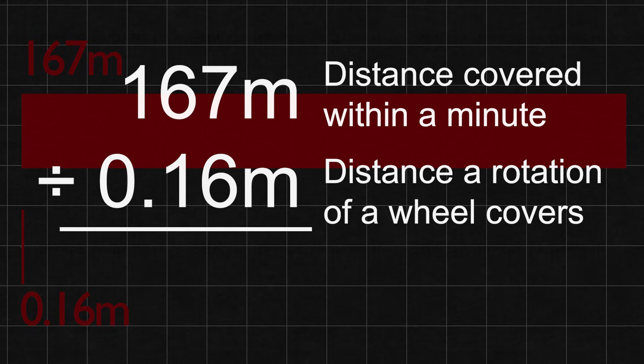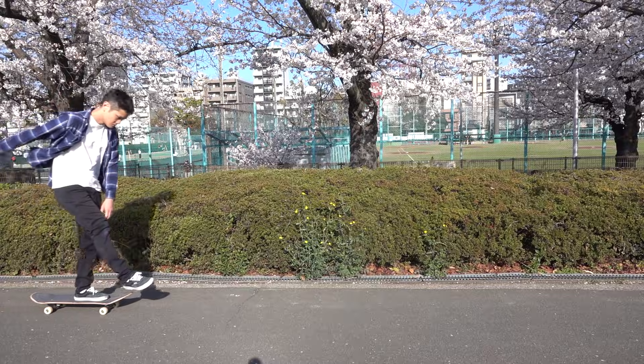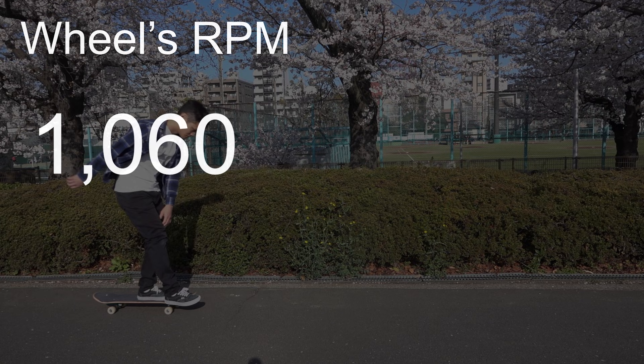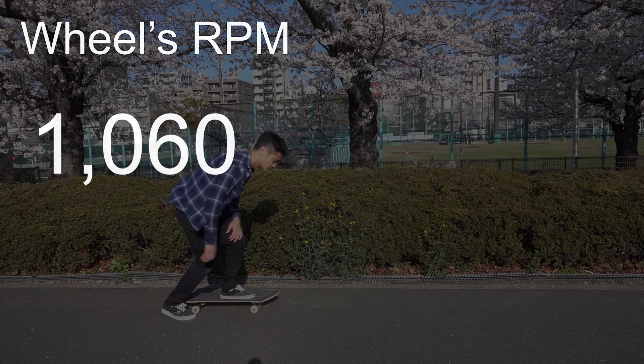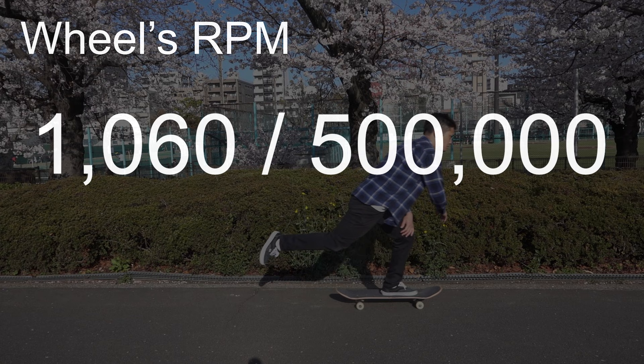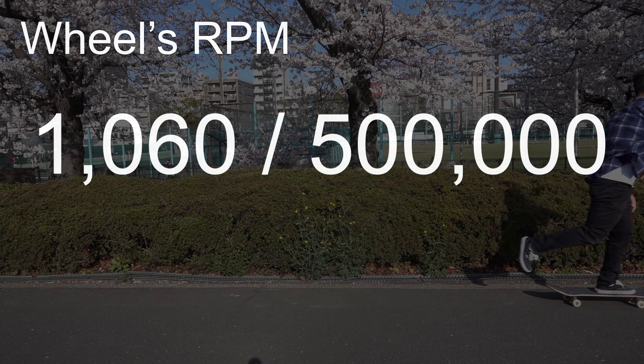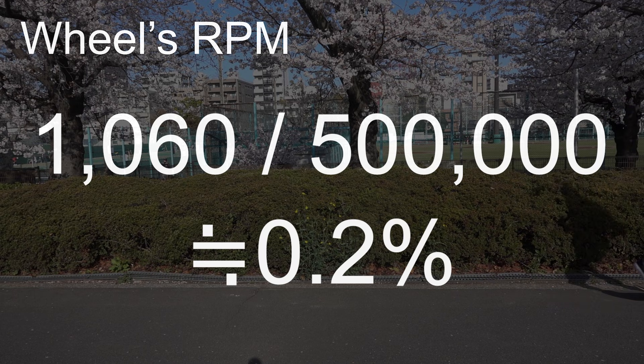If you divide it by 0.16 meters, which is the wheel's circumference, you get about 1060. This means a wheel spins 1060 times a minute when pushing normally, but ABEC 9 bearing's maximum capability is 500,000 RPM. 1060 out of 500,000 is only about 0.2%.